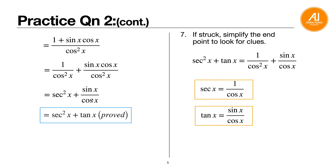The first part is secant squared x (since 1 over cosine squared equals secant squared), and for the second part, cancel the common factor of cosine x to get sine x over cosine x, which is tangent x. So the expression equals secant squared x plus tangent x, completing the proof. This shows how looking at the endpoint and simplifying it reveals the clues you need.